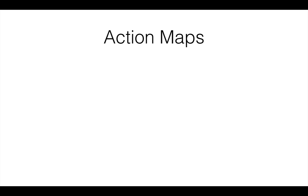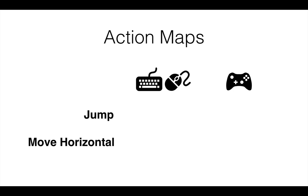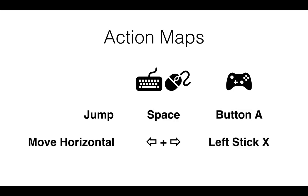So first of all, we have a concept called action maps in the new system — this is also used in some other engines. In an action map you specify different actions, like a jump action or an action for moving horizontally. An action can also be a continuous value like thumbstick input — it doesn't have to be a discrete event. Then you specify different control schemes, like keyboard and mouse or gamepad, and for each action you specify what it maps to per control scheme. So jump might map to space for keyboard and mouse, and button A for gamepad.